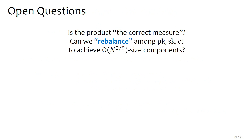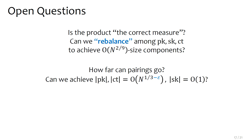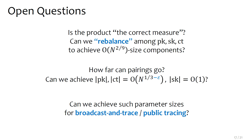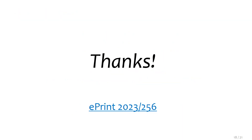Open questions: Is the product the correct measure of trade-offs for pairing? If so, can we rebalance public key, secret key, and ciphertext to achieve n^(2/9) size for all components? How far can pairings go — can we achieve subcubic-root sizes with constant-size keys? Can we achieve such parameter sizes for broadcast-and-trace or public tracing?